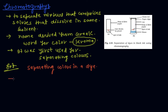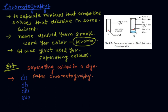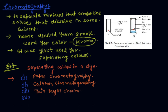Based on the nature of the stationary and mobile phases, chromatography is of four types: the first is paper chromatography, the second is column chromatography, the third is thin layer chromatography, and the fourth is gas chromatography.